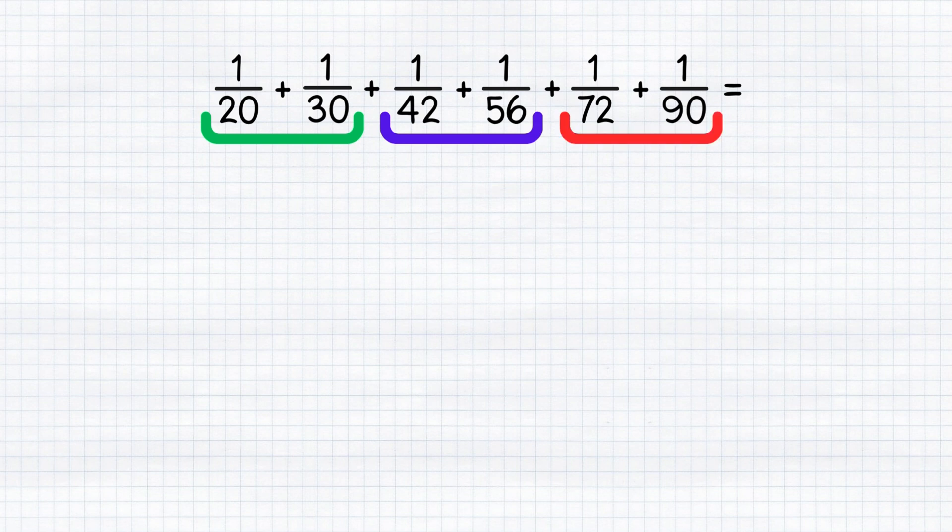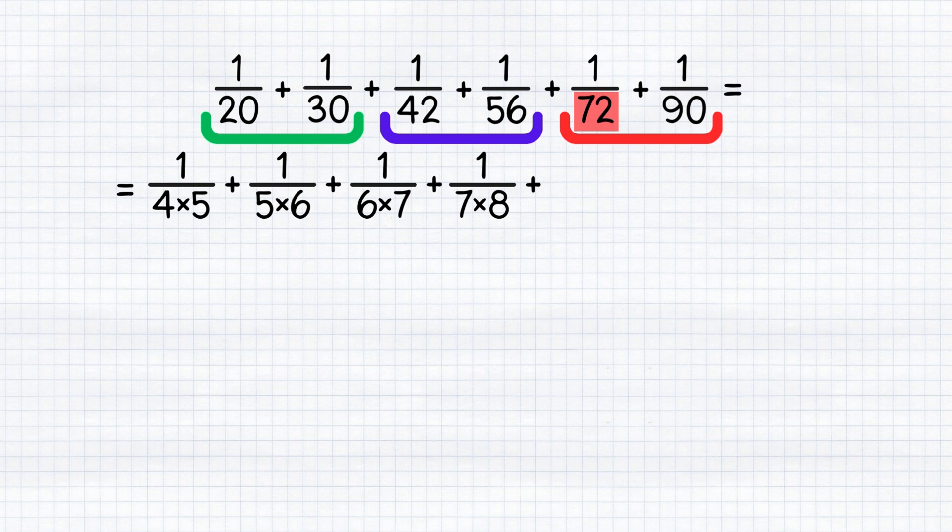The denominators of these fractions can be easily factored. For instance, 20 can be factored as 4 and 5, 30 as 5 and 6, 42 can be factored as the product of 6 and 7, 56 as product of 7 and 8, 72 as 8 and 9, and 90 as a product of 9 and 10.